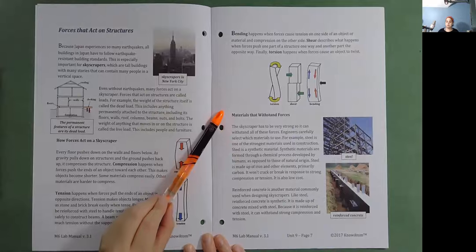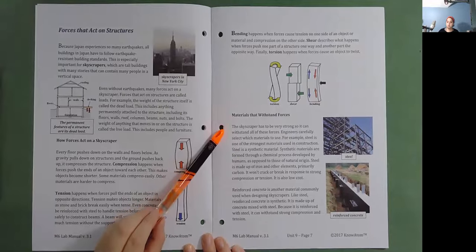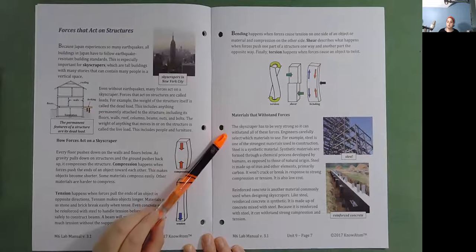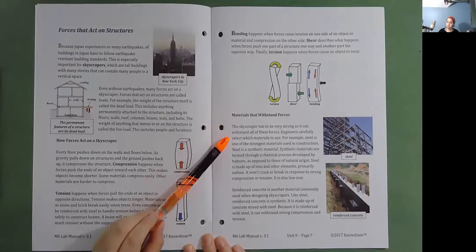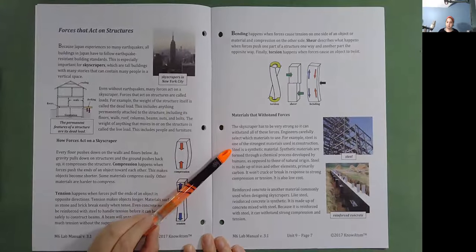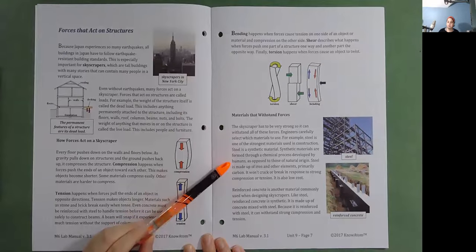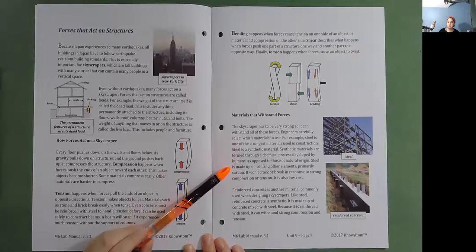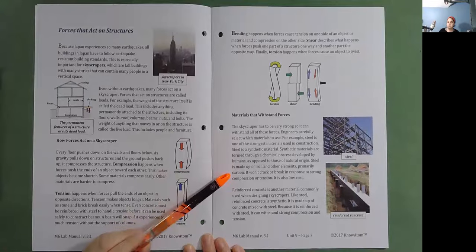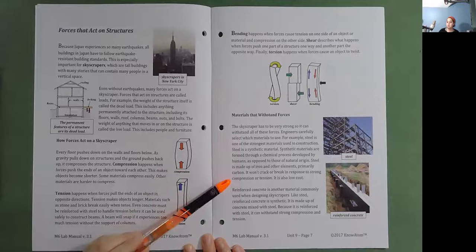Materials that withstand forces. The skyscraper has to be very strong so it can withstand all of these forces. Engineers carefully select which materials to use. For example, steel is one of the strongest materials used in construction. Steel is a synthetic material. Synthetic materials are formed through a chemical process developed by humans as opposed to those of natural origin. Steel is made up of iron and other elements, primarily carbon. It won't crack or break in response to strong compression or tension. It is also low cost.